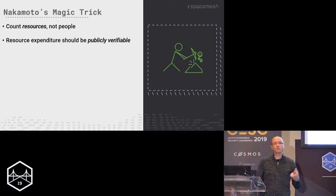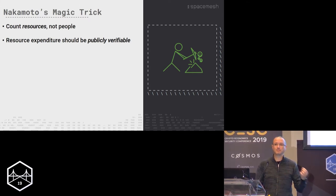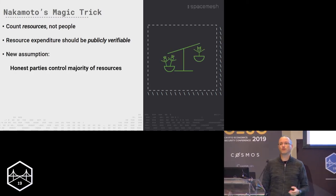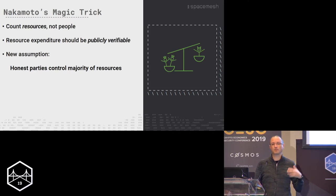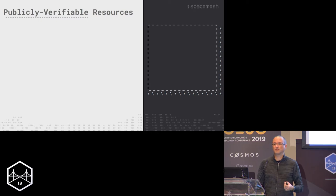For this to work, we need the resource expenditure to be publicly verifiable — everybody needs to be able to check that people have expended resources. The resources should be limited. And now we can switch our assumption from 'there's an honest majority of participants' to 'there's an honest majority of resources' — basically, the honest majority controls the majority of the resources. So the main theme is: what are these publicly verifiable resources? What can we use to build consensus this way?